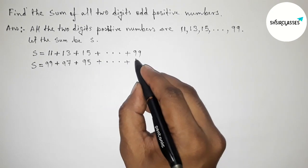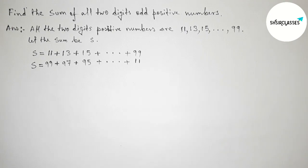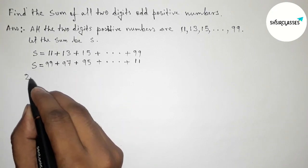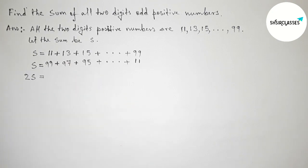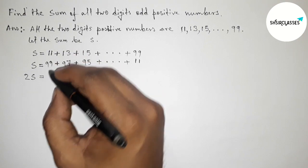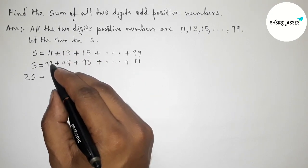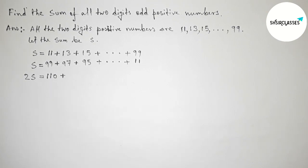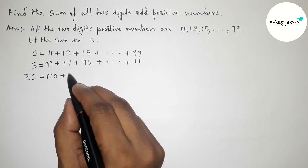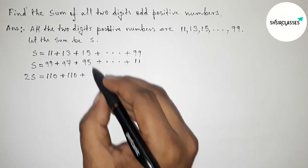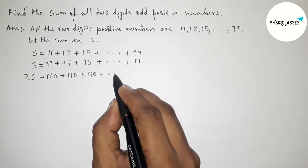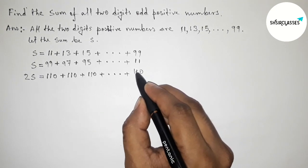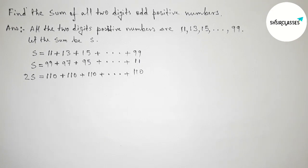Continuing down to 11. Now adding S plus S equals 2S. Adding the two series together, each corresponding pair sums to 110. So we get 110 plus 110 plus 110, continuing for each pair of terms.